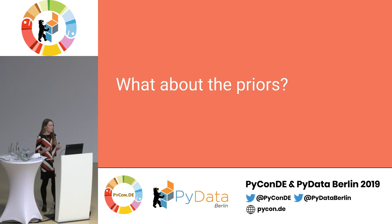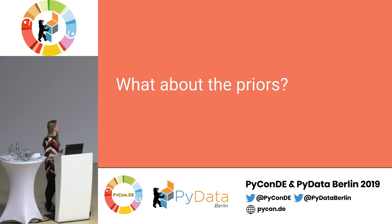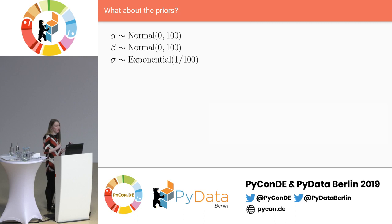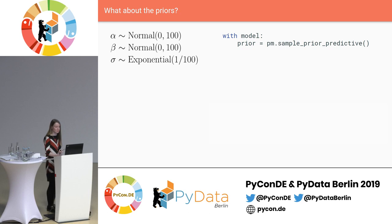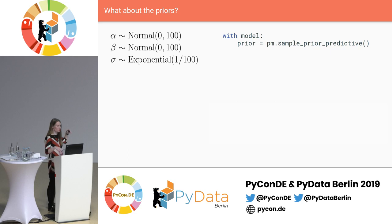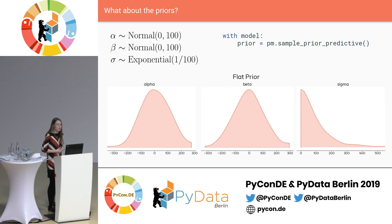I want to talk a bit about priors. When I started doing Bayesian methods, I always found prior declaration a bit esoteric — people would just throw priors at you with some parameters, but I found it difficult to figure out what prior actually fits my problem. I want to show you one way I find much easier to think about whether a prior fits. We can sample from the prior using the PyMC model: it samples data from the three probability distributions and then inputs this into the model, giving us predictions using just those prior distributions.